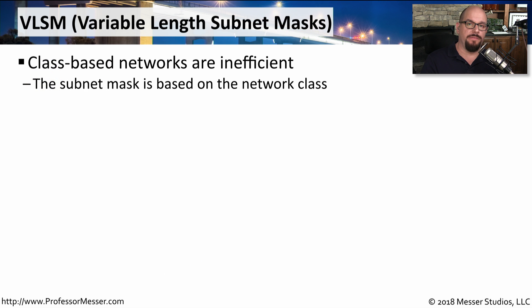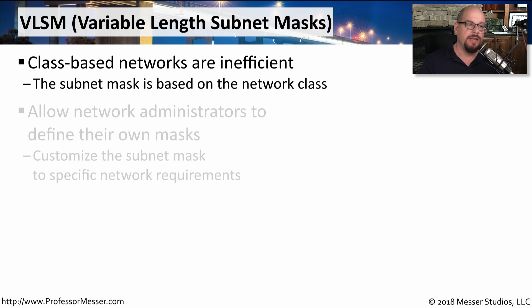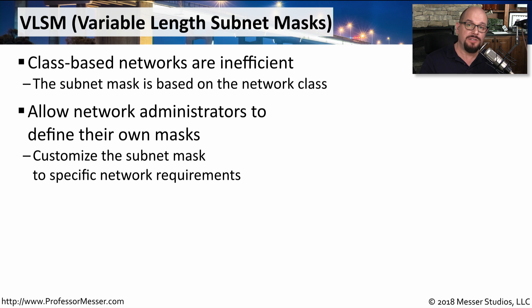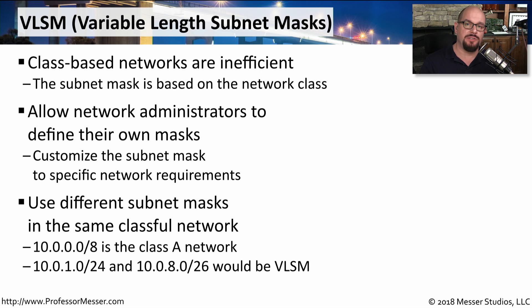As we saw in some of our earlier videos, using our class-based subnet mask was very inefficient. We weren't able to customize the exact size of the network, and we ended up with a lot of leftover IP addresses that wouldn't be used for anything. By giving the network administrator the ability to customize the size of the subnet mask, they could build out a subnetting scheme that provided the exact number of networks and hosts needed. Instead of using these strict class-based subnet masks, we instead commonly use variable-length subnet masks, which we define as VLSM.